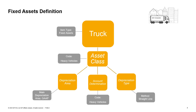Let us look at our example. We have the new truck that OEC Computers purchased at the beginning of the fiscal year. The main definition in the asset master data is the asset class, which includes the association to the other definitions: depreciation area, account determination, and depreciation type. Each fixed asset will be assigned to one asset class — in our example, the truck belongs to the heavy vehicle's asset class. Each asset class includes the default definition of the other settings.